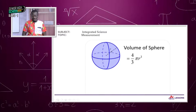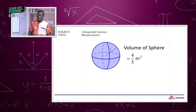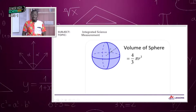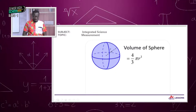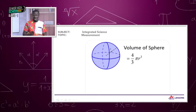On screen we have a diagram of a sphere with the radius from center to surface labeled r. We can use the expression volume equals 4/3 pi r cubed to calculate the volume of a football, golf ball, or table tennis ball. Measure the diameter, halve it to get the radius, substitute it into the expression, and you have the volume.